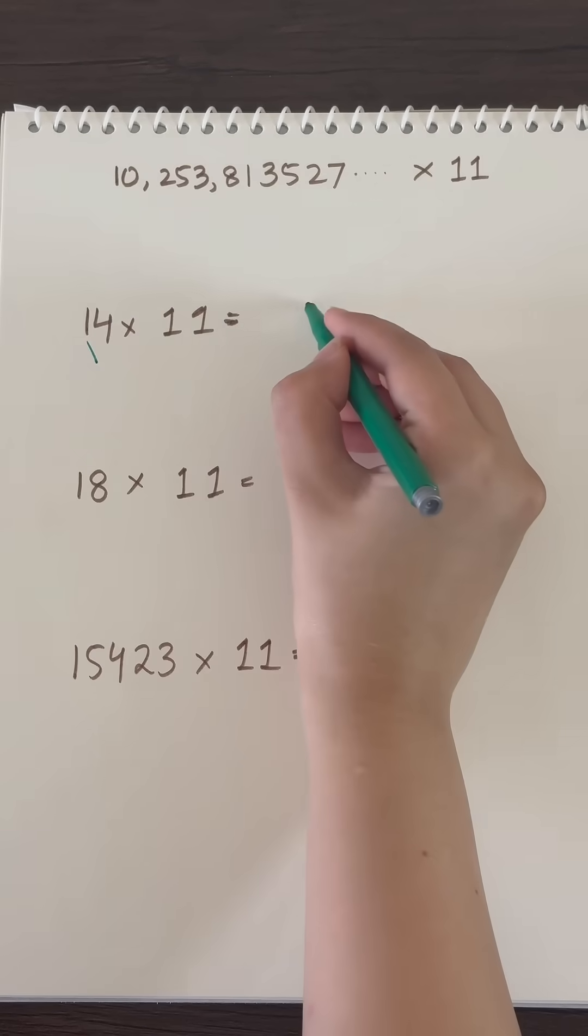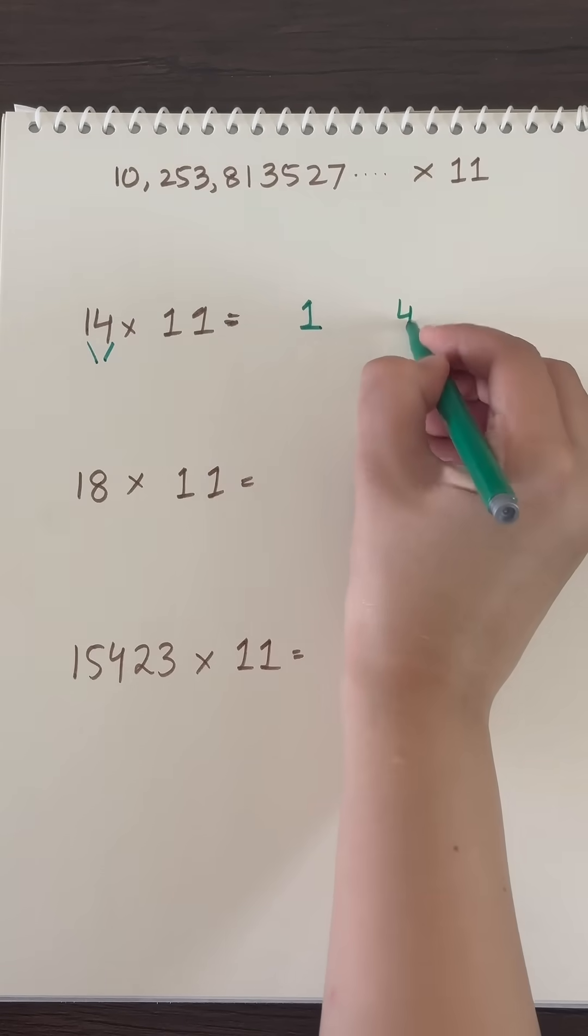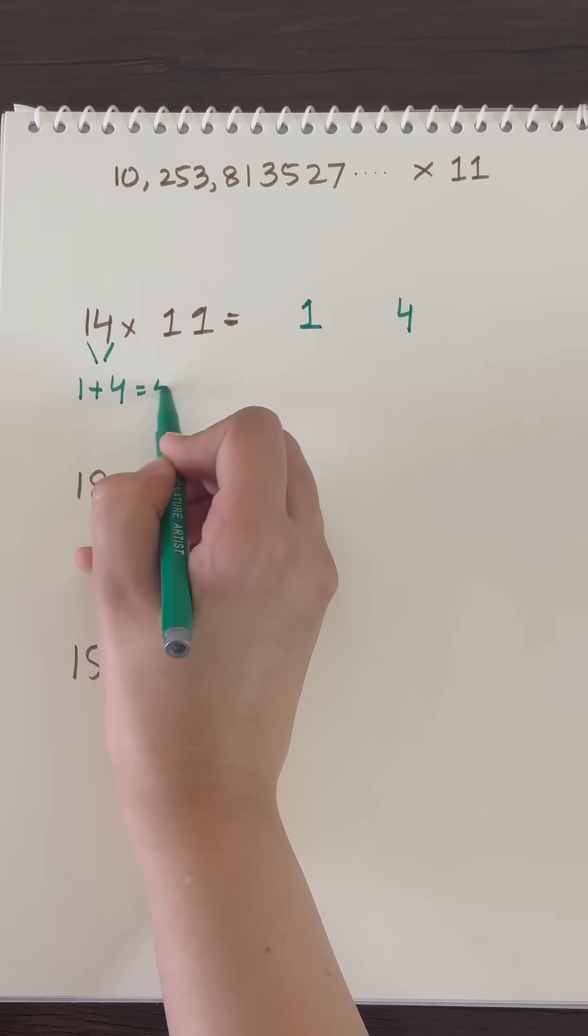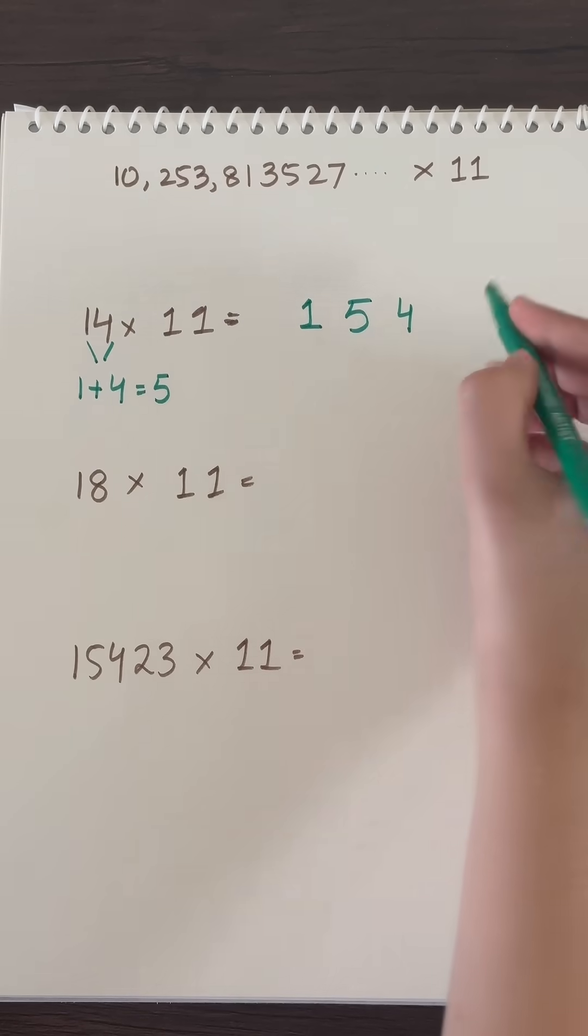To divide 14 by 11, take the 1, take the 4, and for the middle number just add 4 and 1. That gives us 154 as answer.